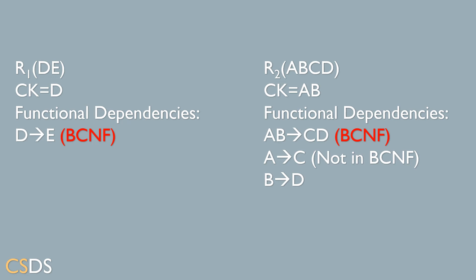The second relation ABCD has a candidate key of AB. The functional dependency AB→CD is in BCNF form because AB is the candidate key of the relation. However, the next functional dependency A→C is not in BCNF form and violates it, so we'll apply step two to this functional dependency.